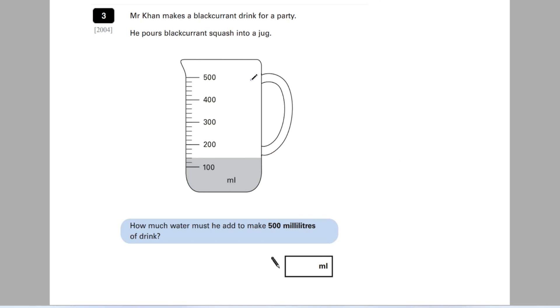Another question. Again we get a measuring jug here with increments. It says, Mr Khan makes a blackcurrant drink for a party. He pours blackcurrant squash into a jug. How much water must he add to make 500 millilitres? So a different kind of question. He needs to get it to this point here, 500 millilitres. Currently that's how much juice he's got, but we don't know the exact amount because we don't know these increments.